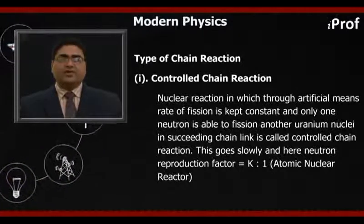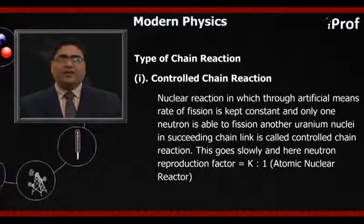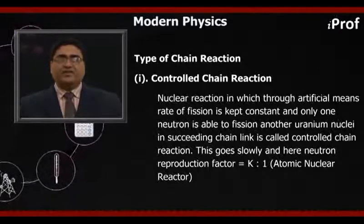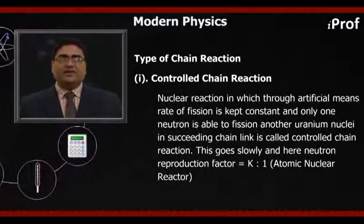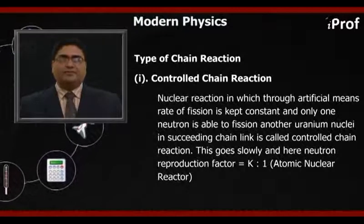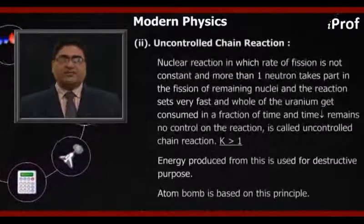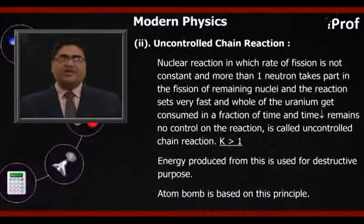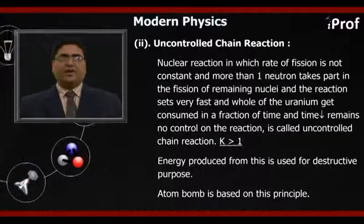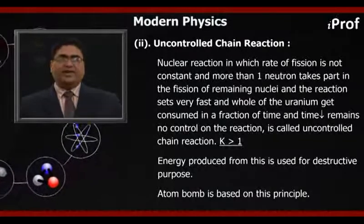This reaction goes slowly and here the neutron reproduction factor K is 1. This reaction takes place in an atomic, that is, nuclear reactor. Second: uncontrolled chain reaction — nuclear reaction in which the rate of fission is not constant and more than one neutron takes part in the fission of remaining nuclei.